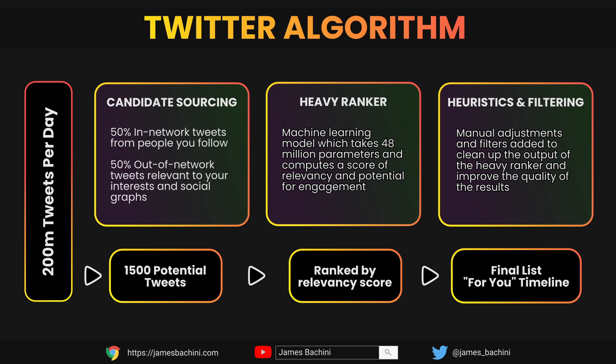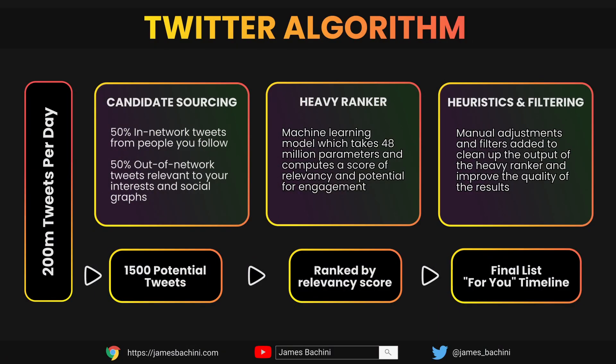First, candidate sourcing. On Twitter there are 200 million tweets a day, and candidate sourcing breaks this down into about 1,500 potential tweets to make up your timeline. It has to extract from that vast amount of content some tweets which may or may not be suitable for the timeline and rank them accordingly. To do this it sources tweets 50% from people you follow and 50% from people you don't follow who might have a similar interest or whose tweets may be relevant to your industry. These 1,500 tweets are then passed to the heavy ranker.